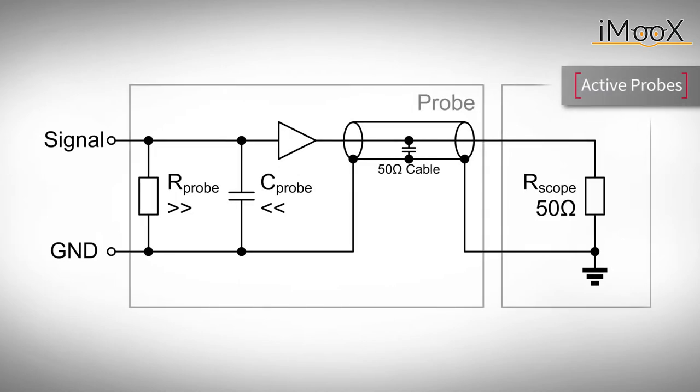Besides passive probes, there are active probes that use active components such as transistors or amplifiers. They have an increased input resistance and a decreased input capacitance and can therefore be used for high impedance circuits and also for high speed measurements. A drawback is introduced by their limited input voltage range.